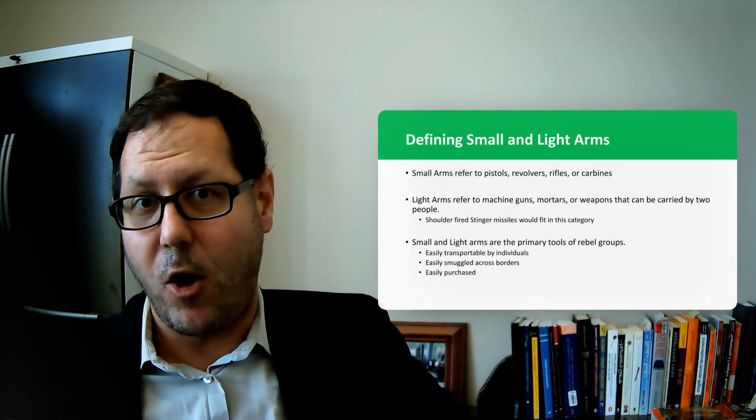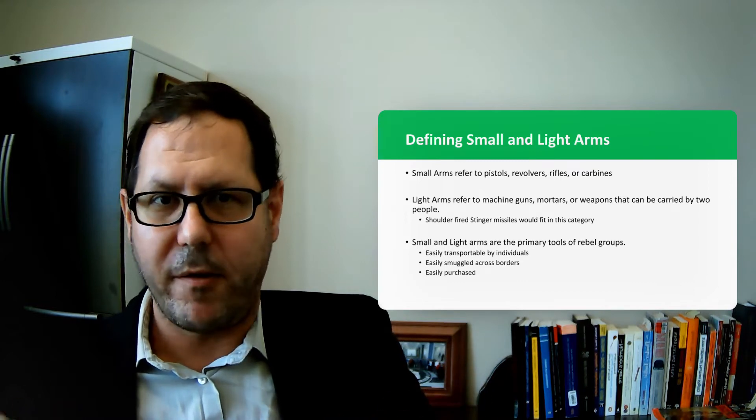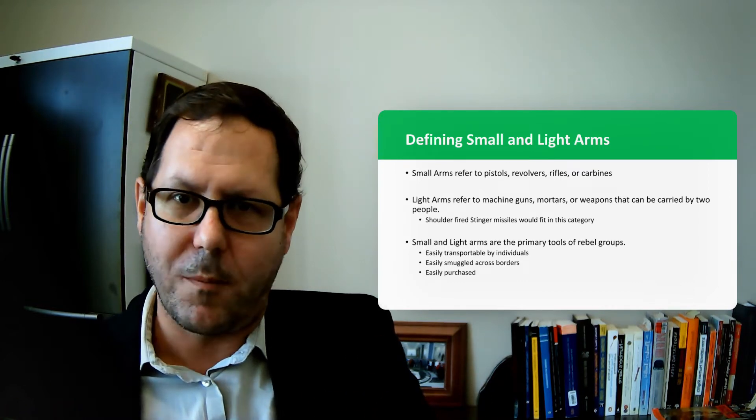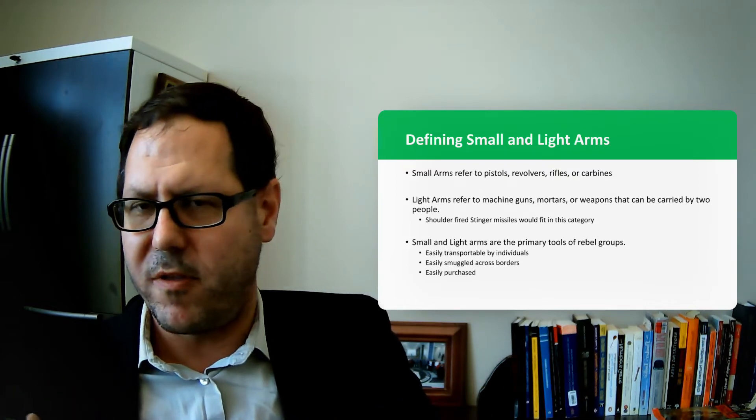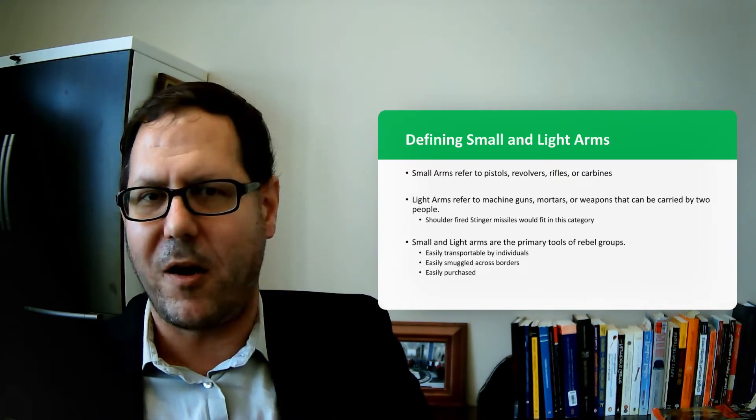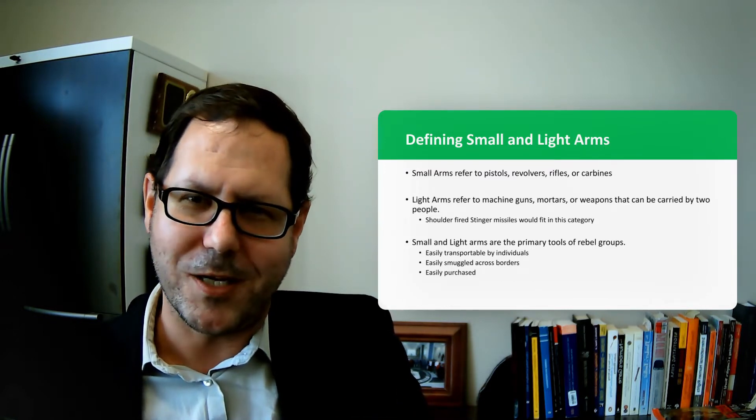When we're talking about small and light arms, small arms typically refers to things that an individual can carry—a revolver, pistol, rifle, or carbine. Light arms are things that typically one to two people can carry—a machine gun, mortar, maybe even a shoulder-fired surface-to-air missile like a Stinger.